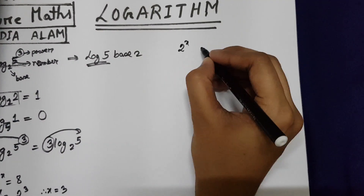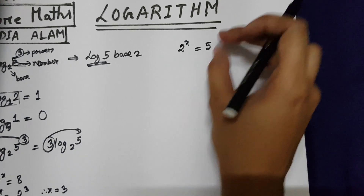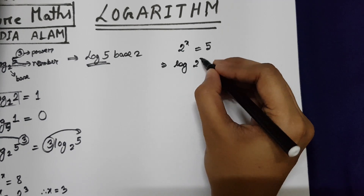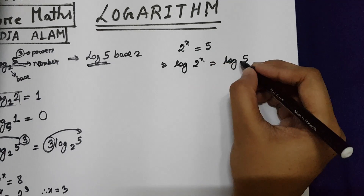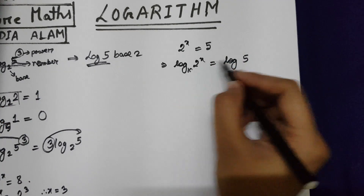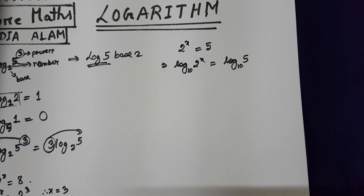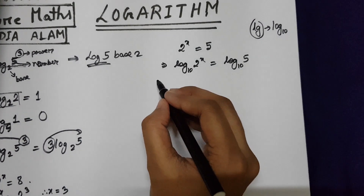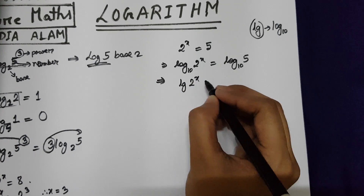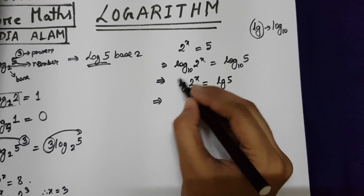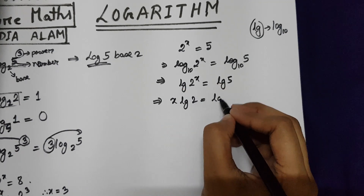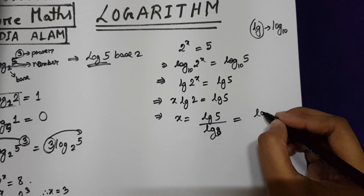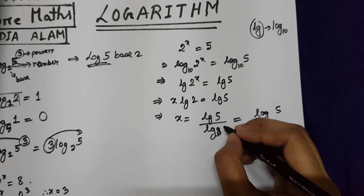We have 2 to the power of x equals 5. You cannot convert this as 2 to the power of something, so we need to take logarithm at both sides of the equation. If you do not write any base, it means the base is 10 by default — you can also write it as lg, which means log with a base of 10. So writing lg of 2 to the power x equals lg 5, you can shift x to the front: x times lg 2 equals lg 5, giving x equals lg 5 divided by lg 2, which is basically log 5 with base 2.